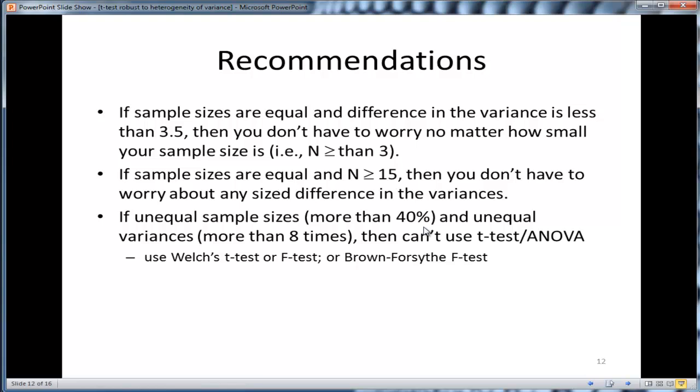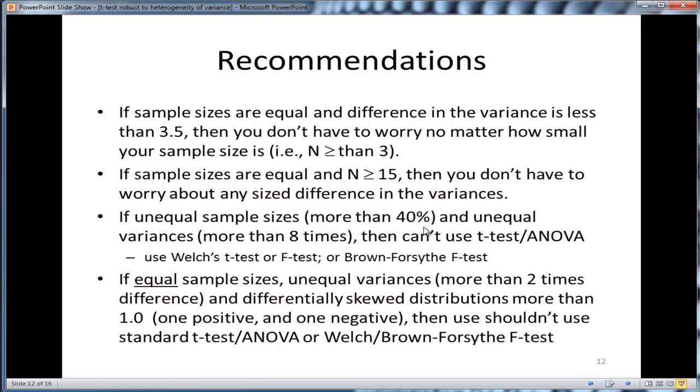What are your options if you have unequal sample sizes of greater than 40%? Well, you can do the Welch's t-test or the Welch's f-test or the Brown and Forsyth f-test. These tests do not assume homogeneity of variance, and they do not assume equal sample sizes. They're quite phenomenal statistics from that perspective. I'm even asking the question, why would you ever do the t-test at all? Why not just do the Welch's t-test all the time and Welch's f-test all the time? I have to look into the power trade-off there. I don't think there's much.